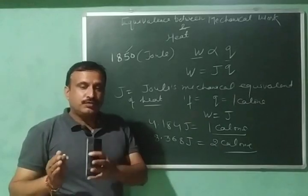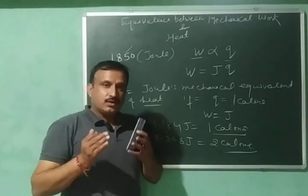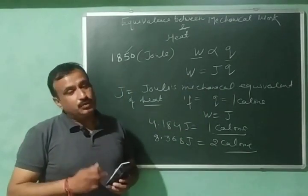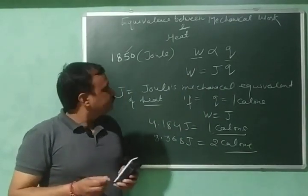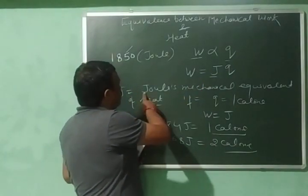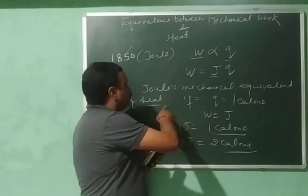I am going to post a video showing why a constant is introduced when this proportionality is converted into equality. So this constant J is called as Joule's mechanical equivalent of heat.